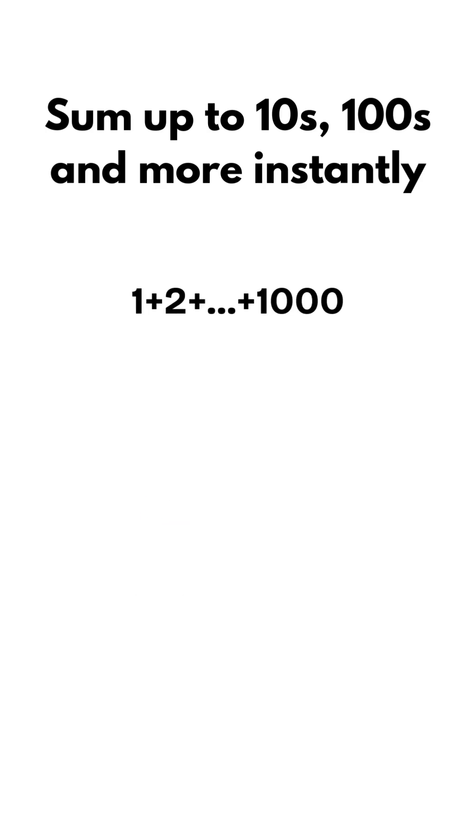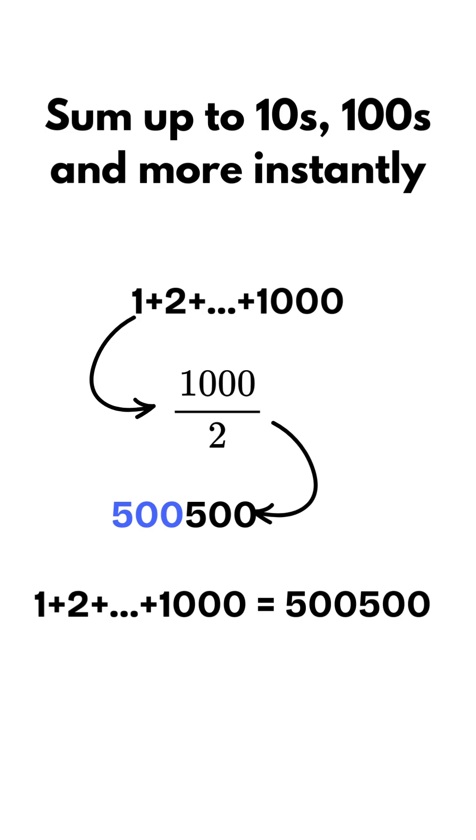Ultimate test? Add 1 plus 2 plus all the way up to 1000. Let's divide 1000 by 2. It's 500. Now add another 500 to the side to it. It's 500,500. We got it.